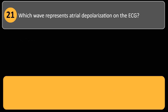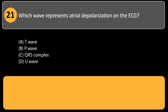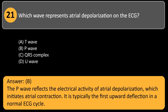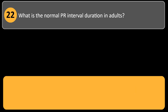Which wave represents atrial depolarization on the ECG? A. T-wave. B. P-wave. C. QRS complex. D. U-wave. Answer: B. The P-wave reflects the electrical activity of atrial depolarization, which initiates atrial contraction.